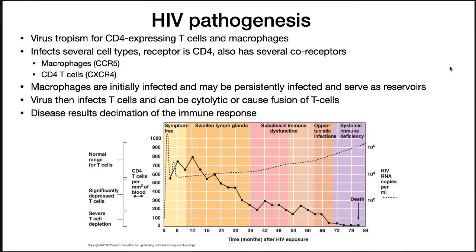Regarding HIV pathogenesis, the virus targets CD4-positive cells — these are T cells and macrophages, which are pivotal in expression of the immune system. HIV is so deadly because it eliminates the victim's immune system. Each cell has a co-receptor: in macrophages it's CCR5, and in T cells it's CXCR4, and you have to have this to be infected. Macrophages are initially infected and may be persistently infected, serving as reservoirs, since the virus inserts into the genome and can sit there for many years before active infection begins.